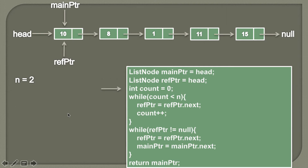We will create an integer variable by name count and assign a value zero to it. The idea behind this algorithm is: in order to find the nth node from the end of the list, we have taken these two pointers, both pointing to head. We will make the reference pointer move n positions ahead. When the reference pointer has traversed n positions, we'll move both the main pointer and reference pointer together till the reference pointer encounters null. When the reference pointer encounters null, the main pointer will be at the nth position from the end of the list.